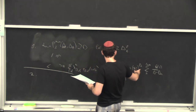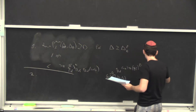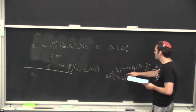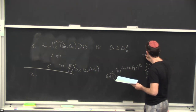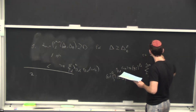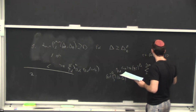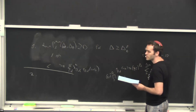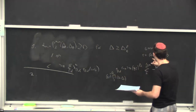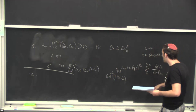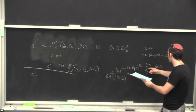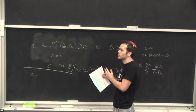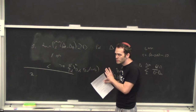Truncating the block expansion is justified because it is an exponentially convergent expansion. For the special point in R and eta variables, it ends up being R equals 3 minus 2 root 2, which is approximately 0.17 — a very small number. This is the crossing symmetric point where U equals V. Since R is so small, the expansion converges very rapidly, so truncating at, say, R_max = 20 is numerically essentially perfect.